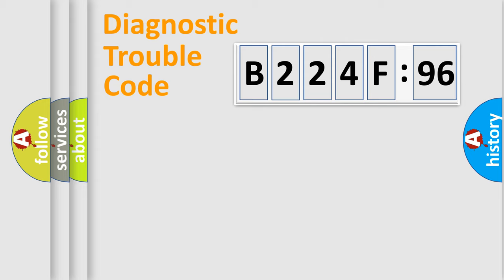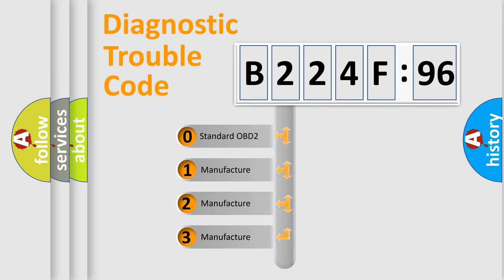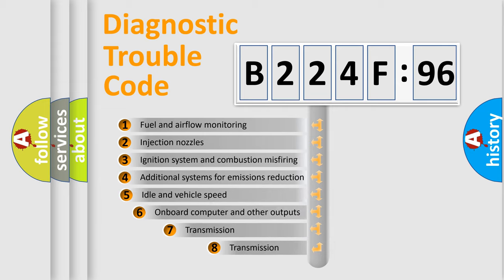Powertrain, Body, Chassis, Network. This distribution is defined in the first character code. If the second character is expressed as zero, it is a standardized error. In the case of numbers 1, 2, 3, it is a car-specific error.